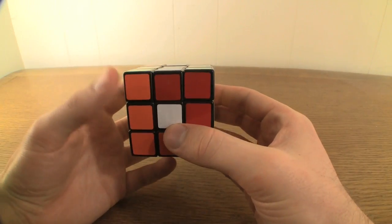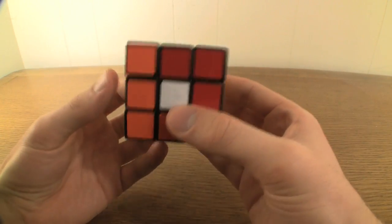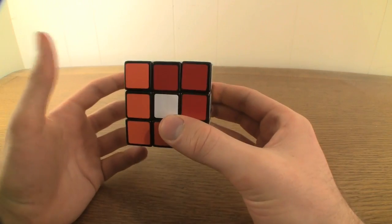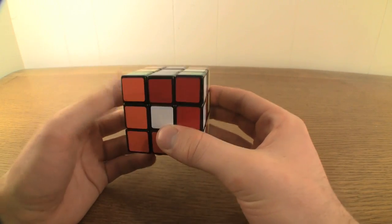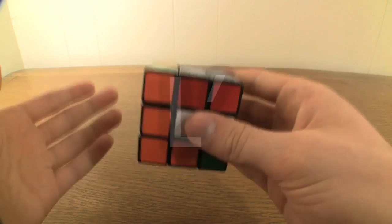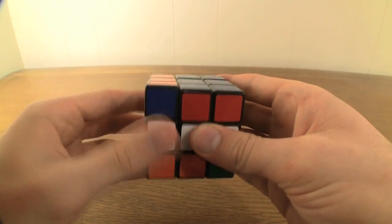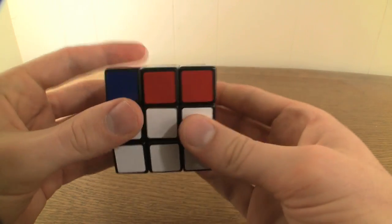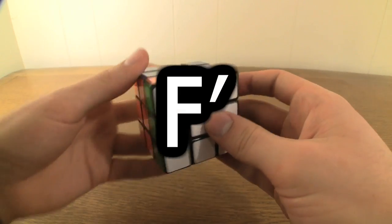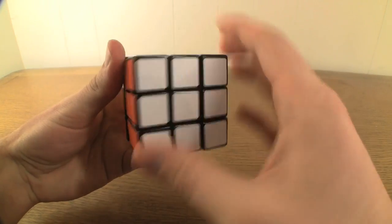A capital letter followed by a prime symbol indicates a 90 degree counterclockwise turn of the wedge represented by the letter as though we were facing that wedge. An R prime would look like this. An L prime would look like this. A D prime would look like this. A U prime would look like this. And an F prime would look like this.